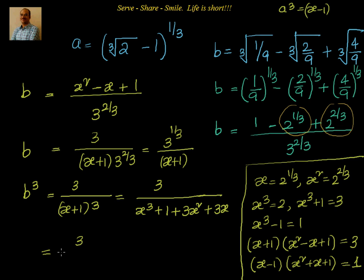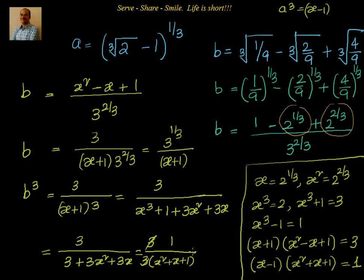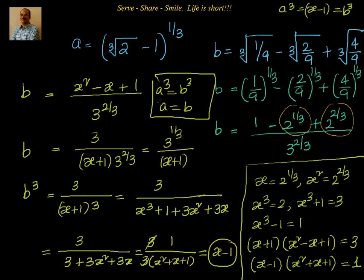We simplify: 3 divided by (x³ + 1 + 3x² + 3x). Since x³ + 1 equals 3, the denominator becomes 3 + 3x² + 3x, which is 3(x² + x + 1). So b cubed equals 3 divided by 3(x² + x + 1), and the 3s cancel giving 1 divided by (x² + x + 1). But from our identities, 1 divided by (x² + x + 1) equals x minus 1. So b cubed equals x minus 1, and since a cubed also equals x minus 1, we get a cubed equal to b cubed, meaning a equal to b.